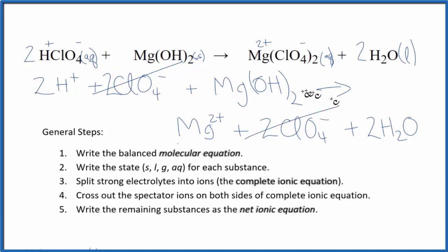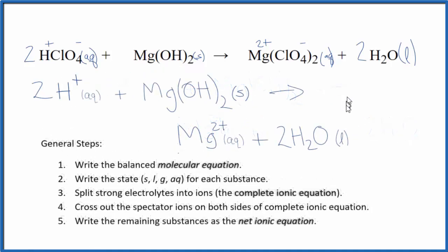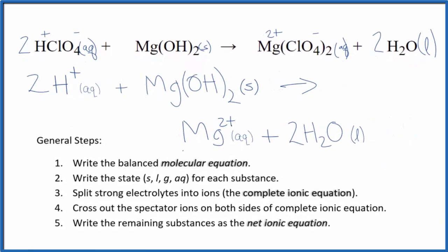Everything else is different. So this is the net ionic equation for HClO4 plus Mg(OH)2. I'll clean this up and write the states in. So this is our balanced net ionic equation for perchloric acid plus magnesium hydroxide.